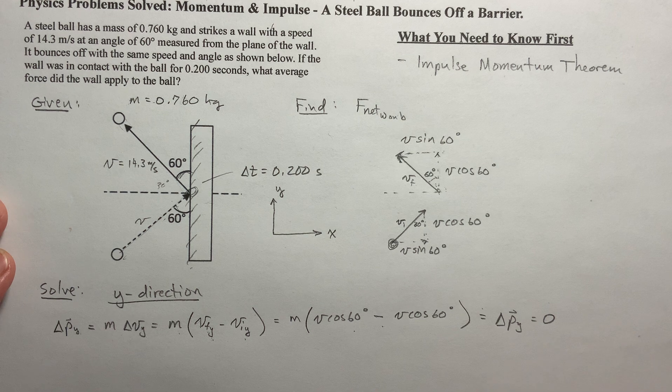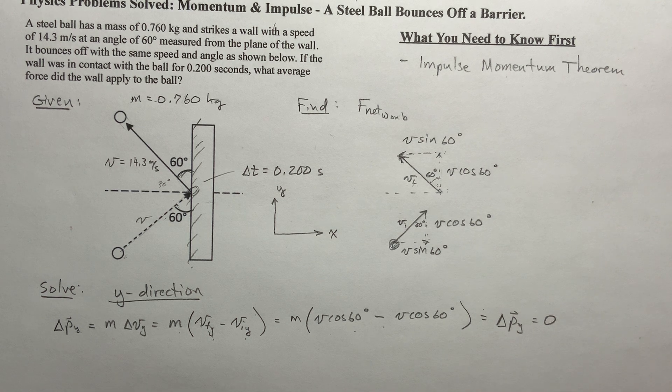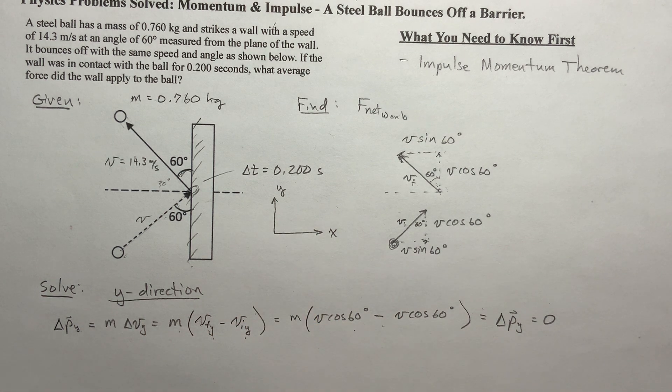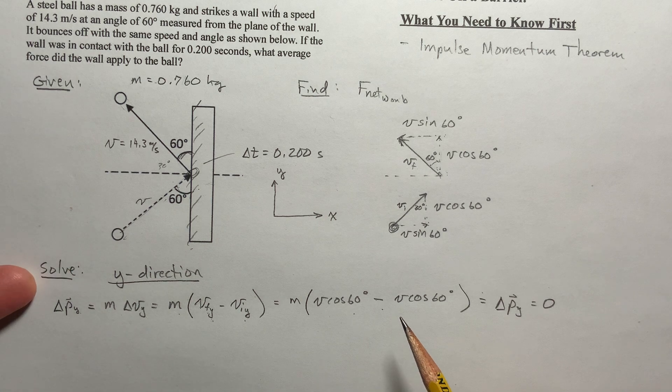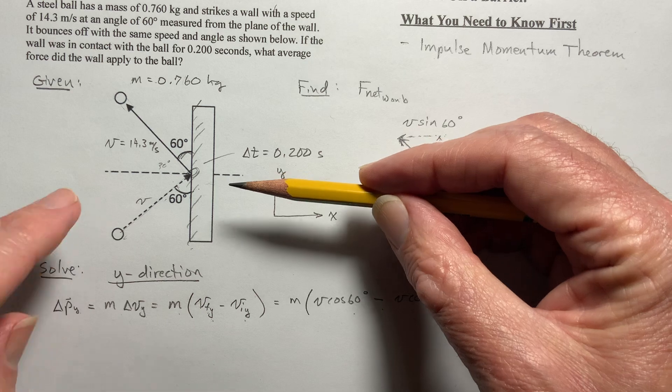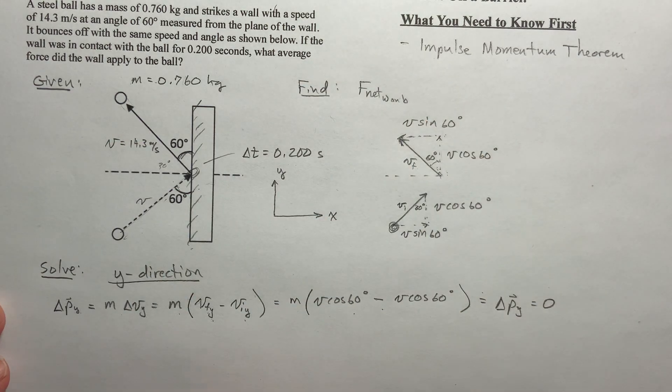So what do you notice about v cosine 60 minus v cosine 60, right? It's zero. So what does that mean? That means the change in momentum in the y direction is equal to zero. Now, what does that mean? That means that there's no impulse in the y direction. And impulse is force times time. Well, the change in time isn't zero, it's point two. So that means the force in the y direction, the barrier applies to the ball in the y direction is zero. So I'm just kind of eliminating the y direction from here. All that explanation is just to say, hey, look, this ball comes like this and it bounces like this. So the force that was applied to the ball by the barrier is all in that x direction, as we're going to see next.